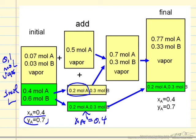So if I add 0.5 moles of A and I evaporate 0.2 moles, then I'll have added 0.7 moles of A to the vapor phase, and I've added 0.3 moles of B to the vapor phase.